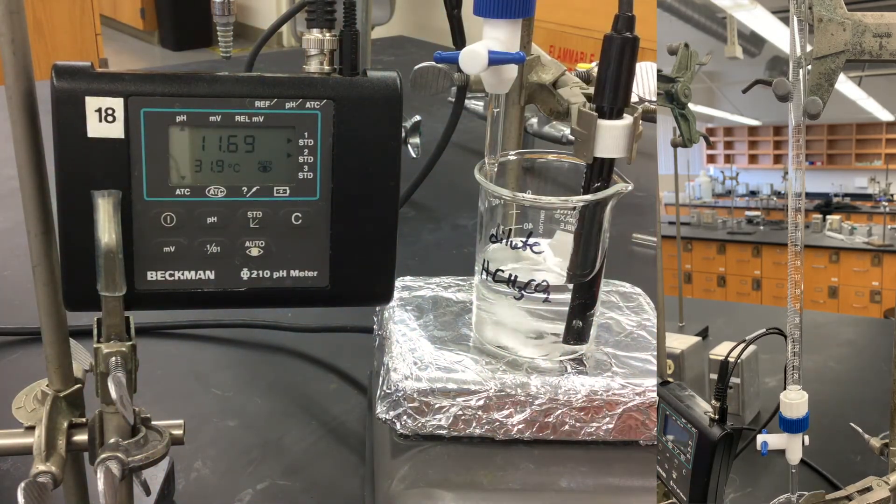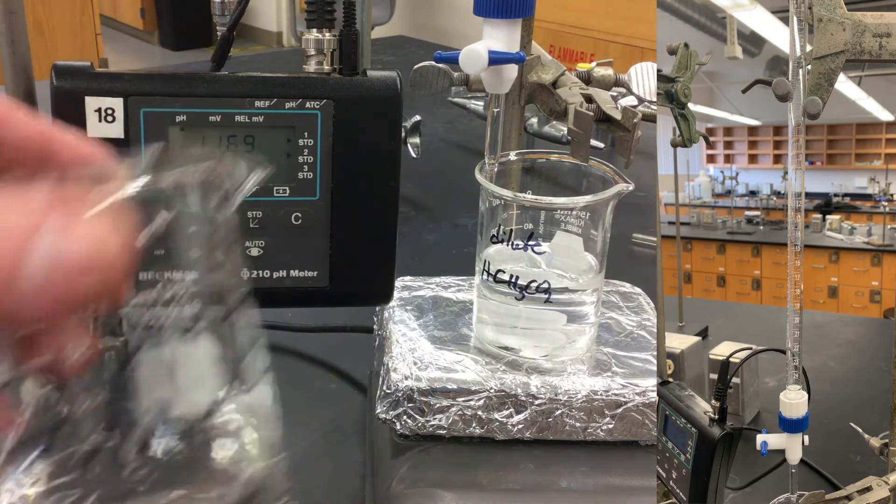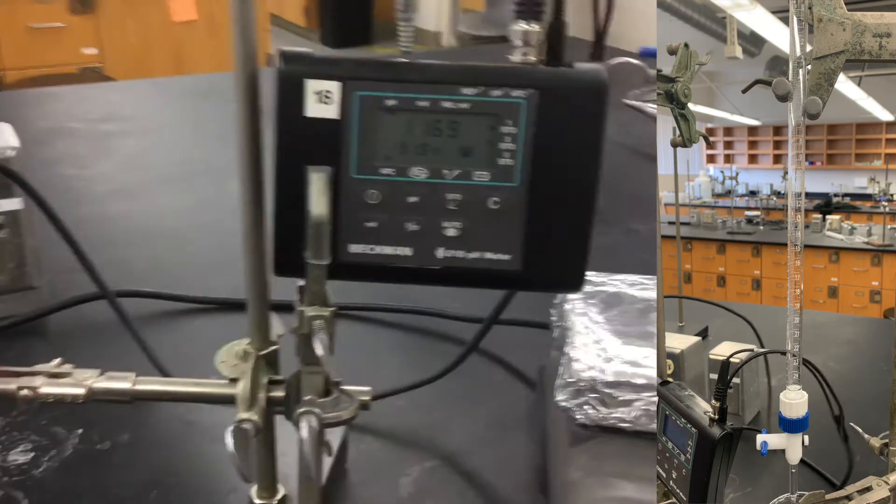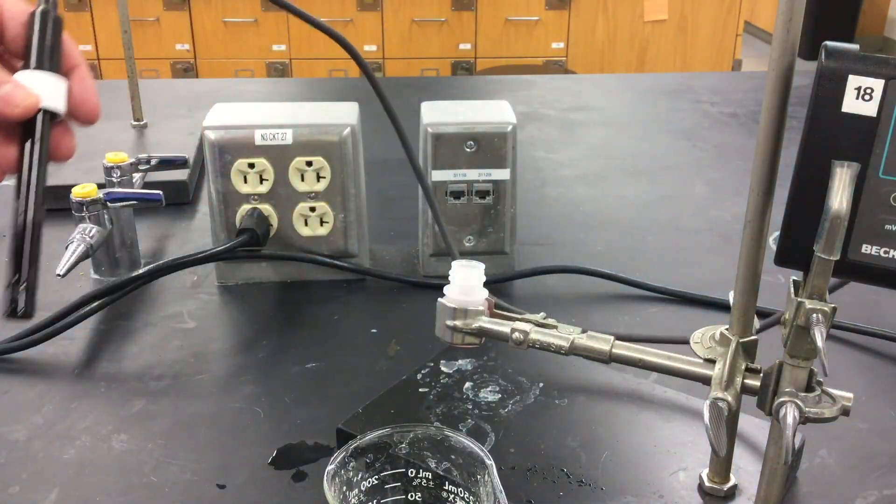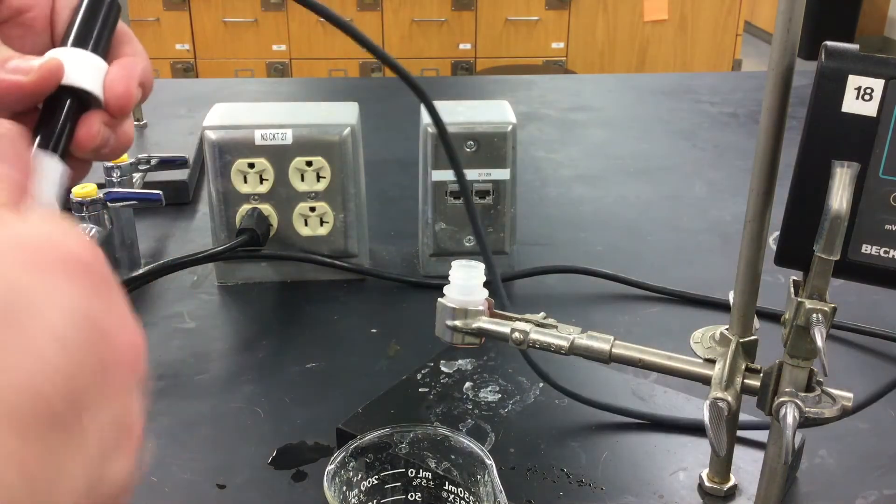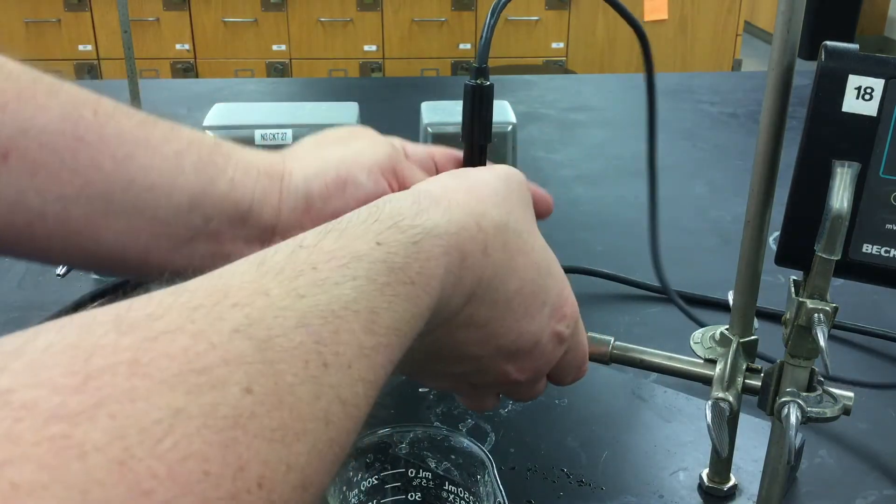Once that is done, we can remove the probe from the actual solution. We can go ahead and grab our waste container and some DI water. Use the DI water to wash it down. Then we can grab a chem wipe and, as always, dry it. And I'm going to store it here in its container while I set up the next part. That's it. We're done.